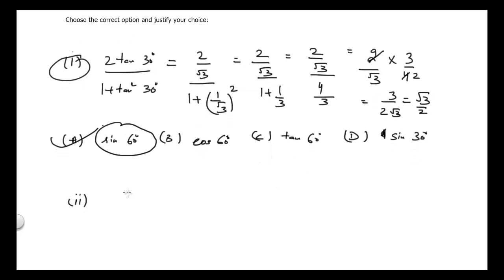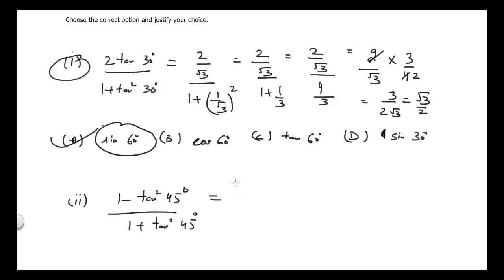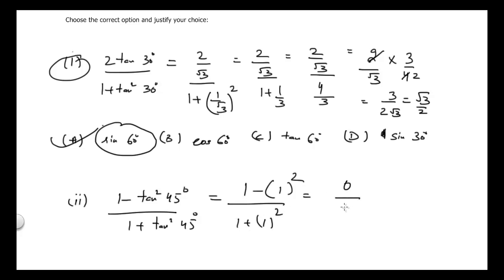Now coming to the second part. The expression is (1 minus tan² 45°) divided by (1 plus tan² 45°). This is very easy to evaluate because the value of tan 45° is just 1. Substituting, we get 1 minus 1 in the numerator, which is 0, over 1 plus 1 in the denominator.